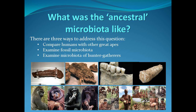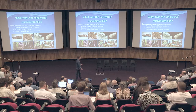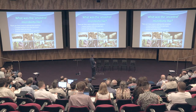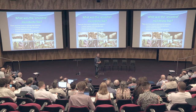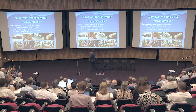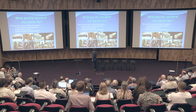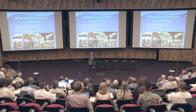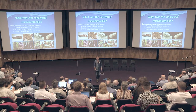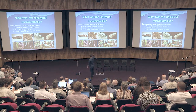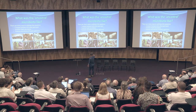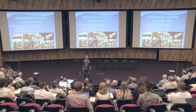We can ask what the ancestral microbiota was like - what did the original hunter-gatherers have in their gut? We can use three approaches: compare ourselves with the other great apes; examine fossil microbiota from coprolites, which are fossil human faeces from which you can extract DNA; examine dental calculus, which also fossilises bacteria; or examine the microbiota of current-day hunter-gatherers.